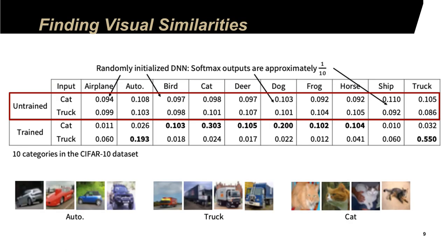Earlier, I explained the need to find visual similarities. How do we actually do that when we are given a real dataset? Let's consider the CIFAR-10 dataset. In the CIFAR-10 dataset, there are ten categories of objects including airplane, automobile, bird, cat, deer, dog, frog, horse, ship, and truck.